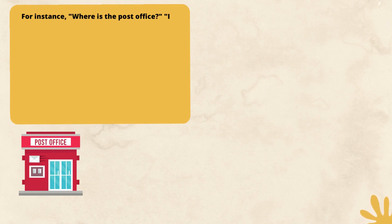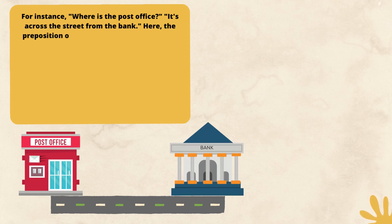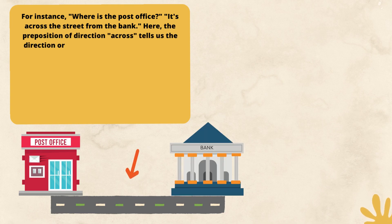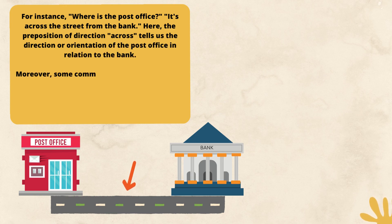For instance, where is the post office? It's across the street from the bank. Here, the preposition of direction 'across' tells us the direction or orientation of the post office in relation to the bank.